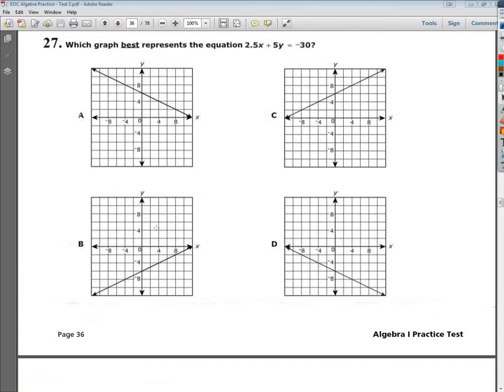Welcome, this is the Tennessee End of Course Algebra 1 Practice Test Number 3, Question Number 27. The question says, which graph best represents the equation 2.5x plus 5y equals negative 30? You may notice that this question is in standard form, so there's a couple ways that you can answer it.